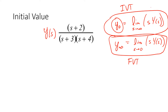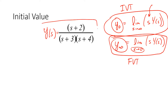When thinking about s in the Laplace domain, it isn't a time variable, but it's almost like frequency. The final value theorem makes more sense when you think of it as: as frequency goes to zero, that's like steady state, and you get the value of y at infinity in the time domain. To get the initial value, multiply both sides by s and take the limit as s goes to infinity.